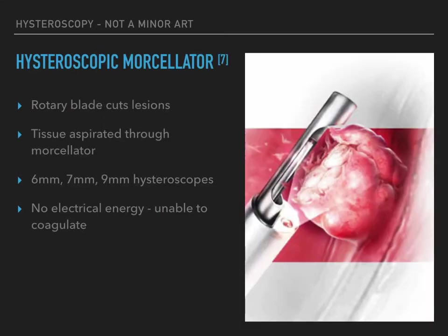The third type of hysteroscope is the hysteroscopic morcellator. It consists of a rotary blade that cuts lesions and this tissue is then aspirated through the morcellator. Morcellators, which are inserted through the working channel of hysteroscopes, exist for use with 6, 7, and 9 mm hysteroscopes. The morcellator does not use radiofrequency electrical energy and thus is not able to regulate bleeding vessels.